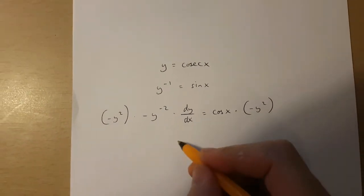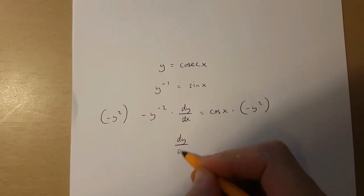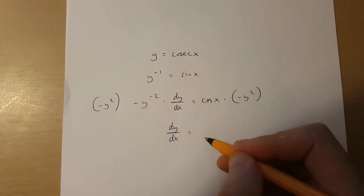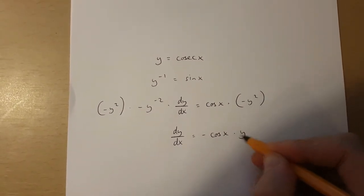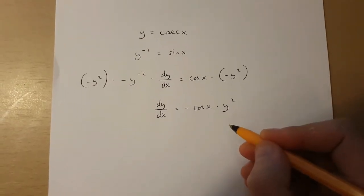If I do this, I end up with dy over dx is equal to minus cos x times y squared.